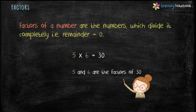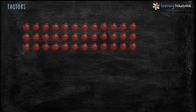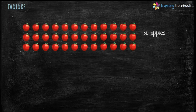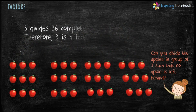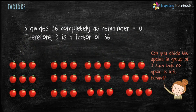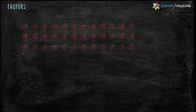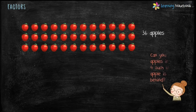Let's understand factors through an activity. These are 36 apples. Can you divide these 36 apples in a group of 3 such that no apple is left behind? Let's make groups of 3 apples, and we find that there is no apple left behind. This means 3 divides 36 completely as remainder is 0, therefore 3 is a factor of 36.